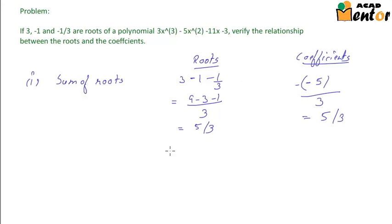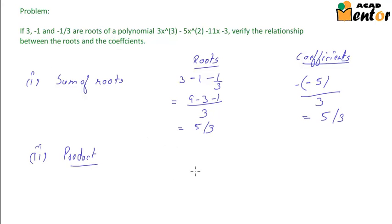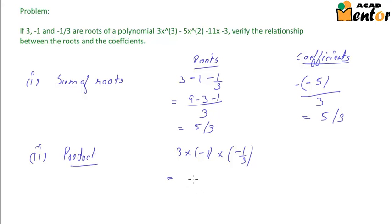We can see that these two are the same. Now let's take the product of roots: multiplying all three roots gives 3 times minus 1 times minus 1/3. The two negatives cancel and the 3s cancel, leaving us with 1.